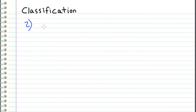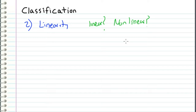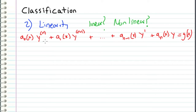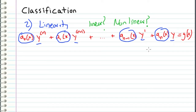The second way that we classify differential equations is by its linearity — meaning, is it linear or is it nonlinear? In general, we can classify a differential equation as linear if it fits this form right here. You can see we have combinations of all of the derivatives of our unknown function y, and all of the coefficients of these derivatives are functions of x only. On the right side of the equation, we have a function of x. So if we can write a differential equation in this form, then it is linear.